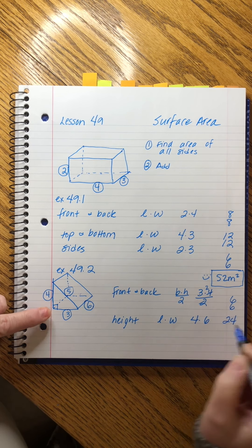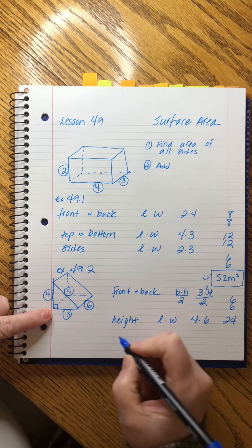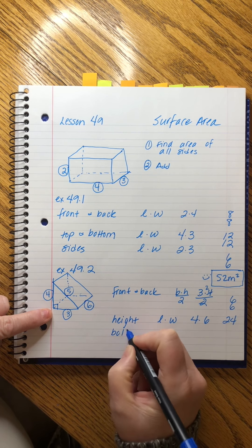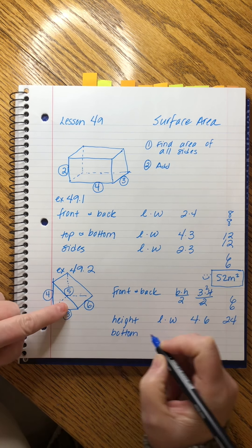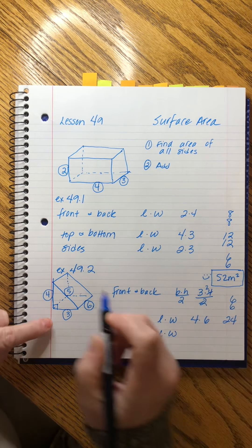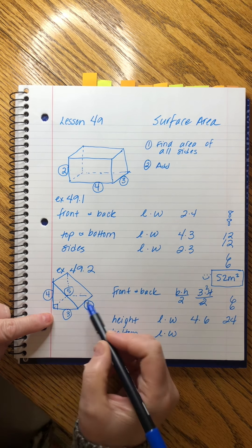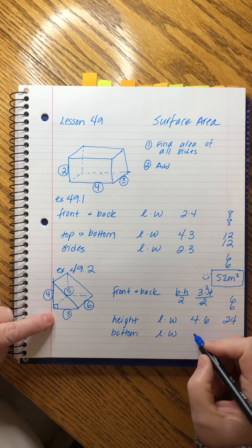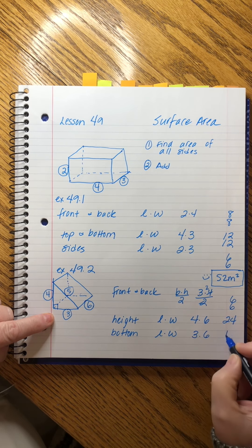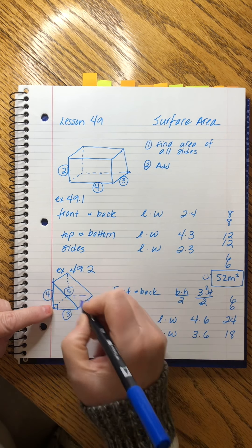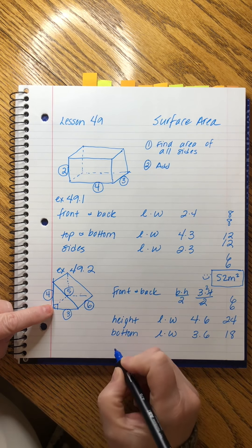Again, that is a rectangle, so it's length times width, and that is 3 times 6. That's 18.